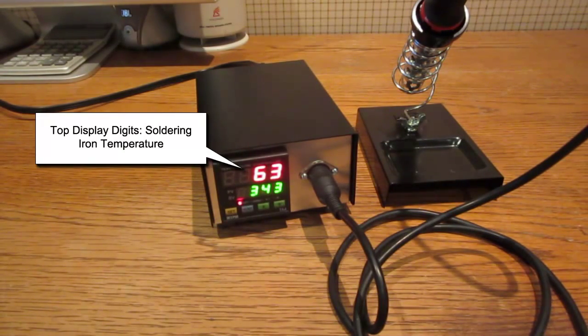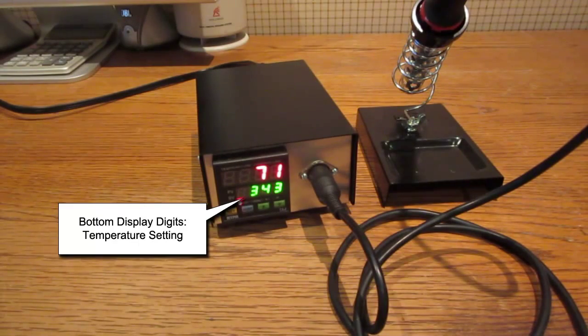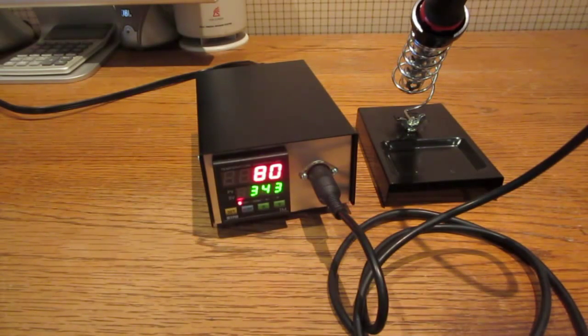The top display shows the temperature of the soldering iron. The bottom display shows the temperature setting. The temperature setting is saved when the unit is turned off. It is set for 343 degrees Celsius. It takes a few minutes to heat up.